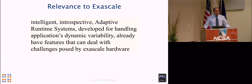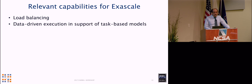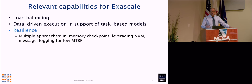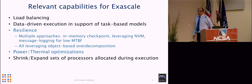This system is relevant to Exascale because the same features of the intelligent adaptive runtime system — developed for handling application dynamic variability like adaptive mesh refinement — are also the features needed at extreme-scale hardware. Those capabilities include load balancing, task-based models, and resilience. CHARM++ very well supports resilience with multiple approaches — for example, the little orange cluster we bring to supercomputing where you can unplug a node while the program continues running. We also have power and thermal optimizations, and a shrink-expand capability that allows changing the number of nodes allocated to a job during execution.